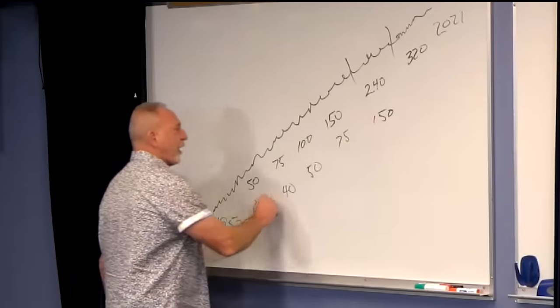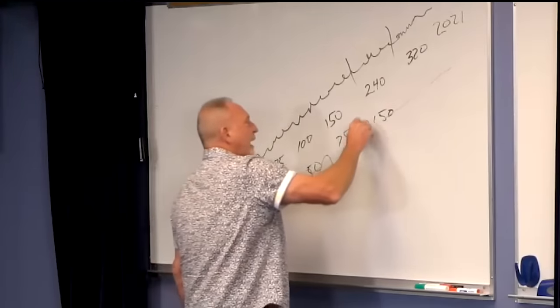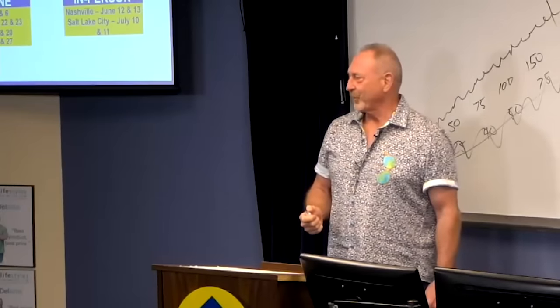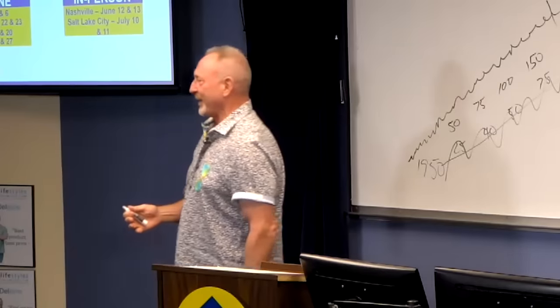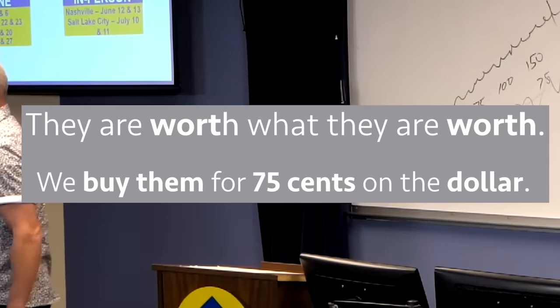If you look at this chart and you see what we can do, oh my gosh, the deals were easier last week. It's ridiculous. They're never easier. They're always exactly the same. They're worth what they're worth and we buy them for 75 cents on the dollar. Does that make sense? It never changes.